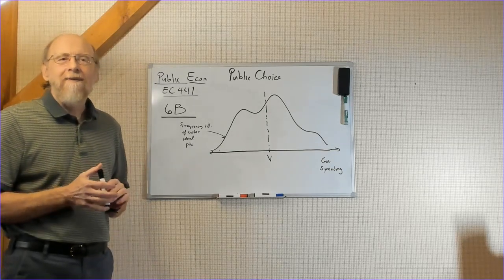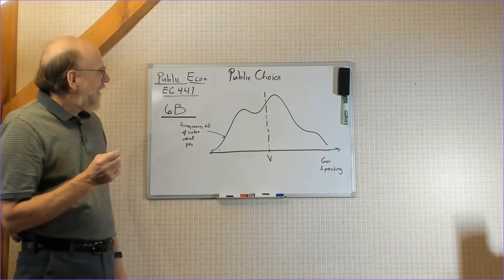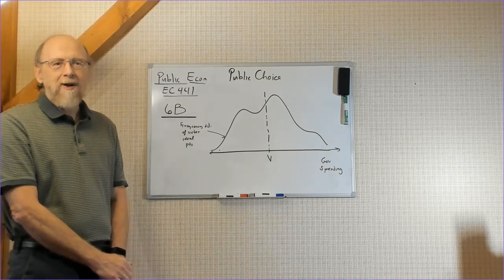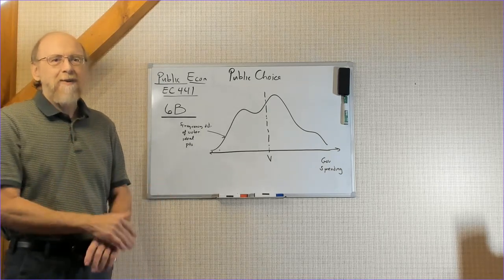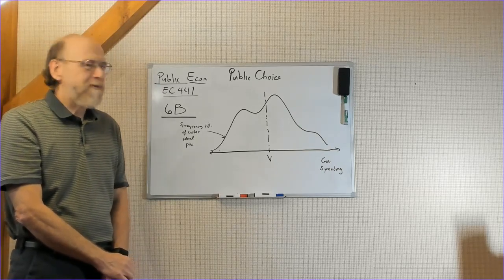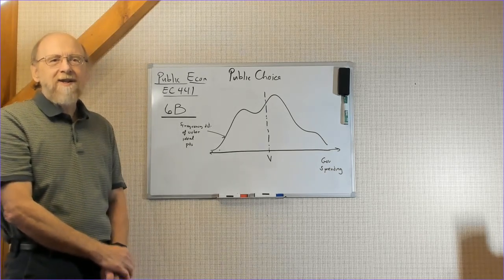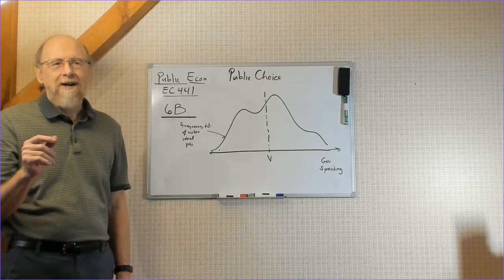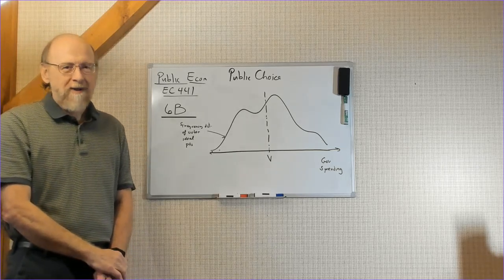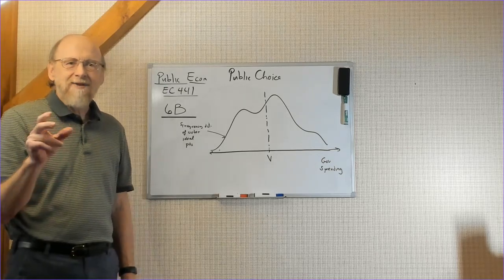Today we're going to talk about voting in elections, mass elections, where there are lots and lots of voters. And I drew this picture of a distribution of voter ideal points up. Now this picture is not meant to be an empirical one.